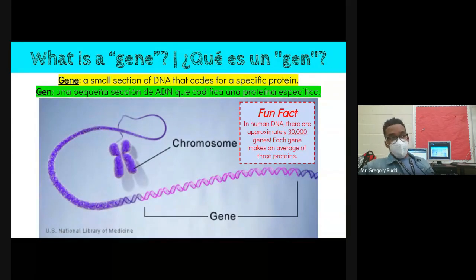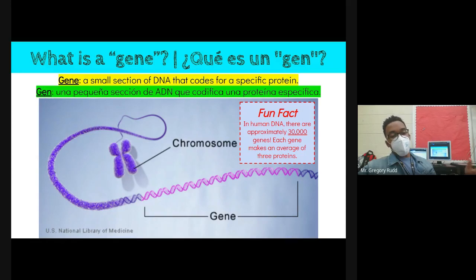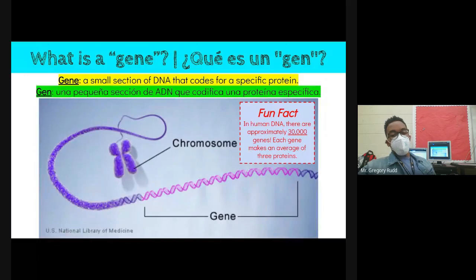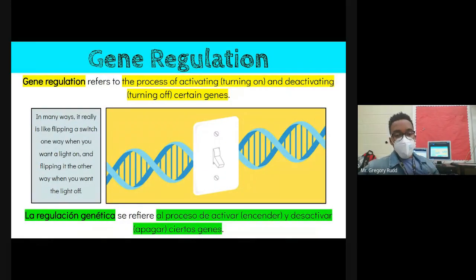Our DNA has about 3 billion base pairs, but in that large book of DNA there would only be about 30,000 genes. Each gene makes, on average, about three proteins. This brings us to another vital process called gene regulation. Gene regulation refers to the process of activating — turning on — and deactivating — turning off — certain genes.